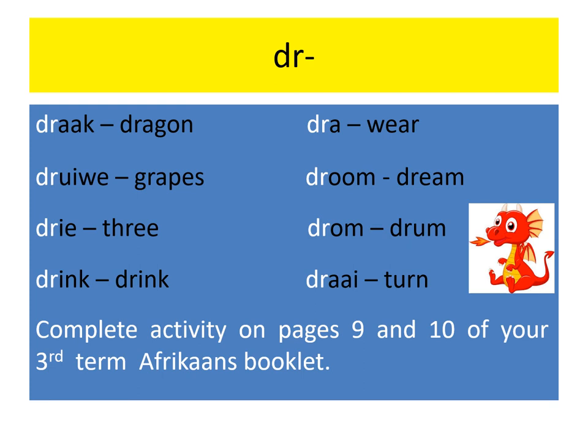Let's go over those words again. Draak — dragon. Draila — grapes. Dri — tri. Drunk — drink. Dra — weigh. Drum — dream. Draai — to turn. Please complete your activity on pages 9 and 10 of your 3rd term Afrikaans booklet.